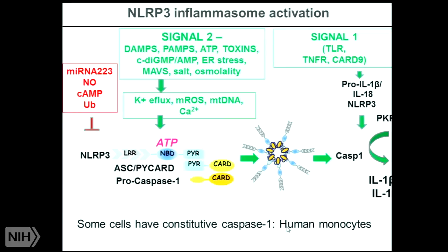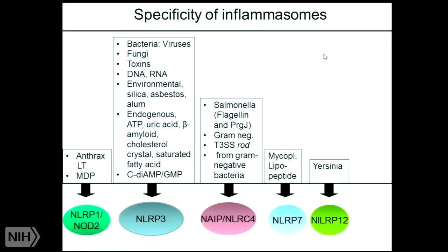For those of you who work with human cells, human monocytes actually do not require Signal 1. Another concept is the specificity of inflammasomes: some have very broad specificity, some have very refined. NLRP3 can be activated by many things; NLRP1 is highly specific, especially in rodents, and anthrax is a key activator — based on much of the work done here at NIH. More recently, Vishva Dixit found an alternative non-canonical inflammasome that activates Caspase-11 through intracellular LPS.